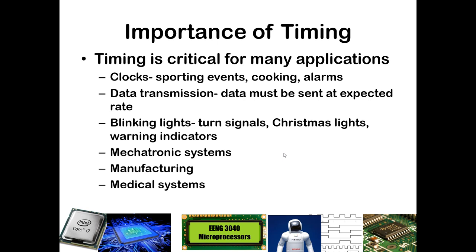That could be for cooking applications where you set a timer for a particular thing to cook. It could be for various alarms — if you wanted to wake up at a specific time, you would need to keep track of what the time is and how much time is remaining until that alarm goes off. We also need to transmit data within a specific time interval, sent at an expected rate and received at an expected rate.